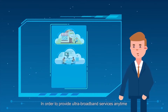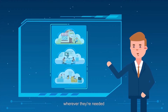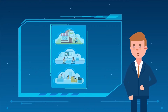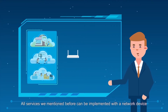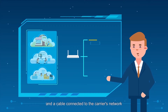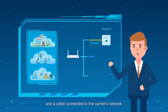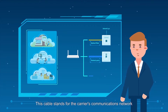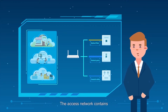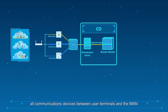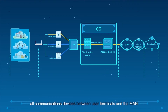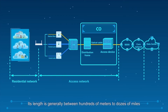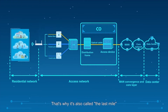In order to provide ultra-broadband services anytime, wherever they are needed, we need an access network. All services we mentioned before can be implemented with a network device and a cable connected to the carrier's network. This cable stands for the carrier's communications network. The access network contains all communications devices between user terminals and the MAN. Its length is generally between hundreds of meters to dozens of miles — that's why it's also called the last mile.